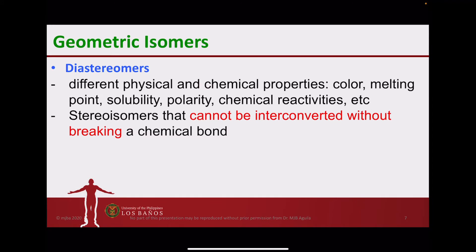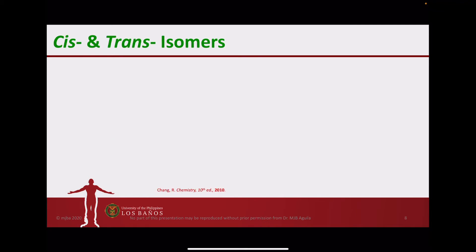Geometric isomers, or diastereomers, have different physical and chemical properties such as color, melting points, solubility, polarity, and chemical reactivities, so these stereoisomers can be differentiated from one another by considering those properties. These stereoisomers cannot be interconverted from one diastereomer to the other without breaking a chemical bond.